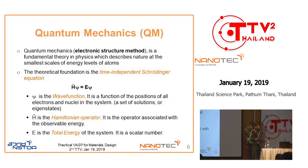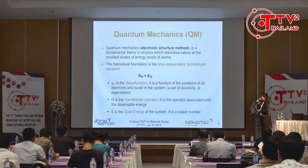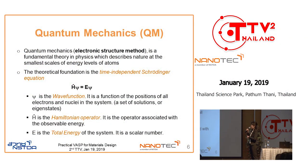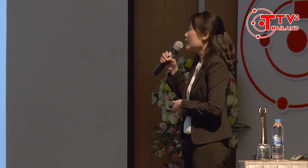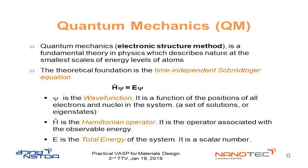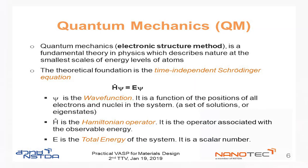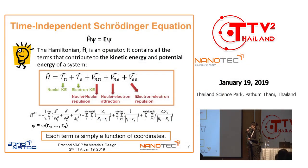Quantum mechanics, or the electronic structure method, is a fundamental theory in physics that describes nature at the smallest scales of energy levels of atoms. The main equation is the time-independent Schrödinger equation. The H-hat is the Hamiltonian operator — the operator associated with all observable energy terms in the system. Psi is the wave function, a function of the positions of all electrons and nuclei, and E is the total energy. How to solve this equation is very difficult.